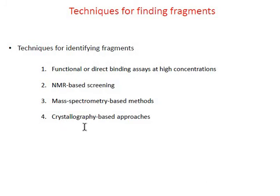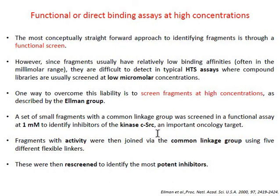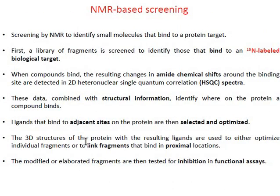There are various techniques to identify fragments. We have direct binding assays or functional assays, NMR, mass spectrometry, and crystallography-based approaches. In direct or functional assays, you have HTS or high-throughput assay systems. However, HTS uses low micromolar concentrations, which are not suitable for identifying small fragments. The solution is screening these fragments at higher concentrations, as applied by the Elman group for identifying kinase SRC inhibitors.